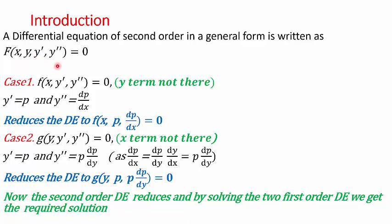Two cases arise. The first one: when my differential equation of second-order has no y terms in it. In such a case, we take the substitution y' = p and y'' = dp/dx. This means we are taking dy/dx as p. If you differentiate both sides with respect to x, you will get y'' or d²y/dx² = dp/dx. On substituting y' as p and y'' as dp/dx, our second-order differential equation reduces to a first-order differential equation in x, p, and dp/dx.